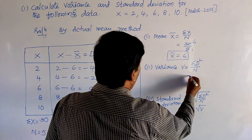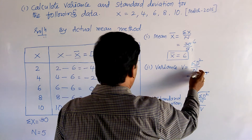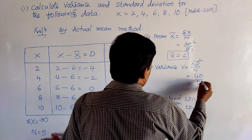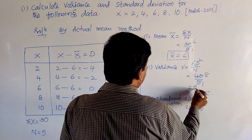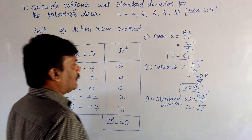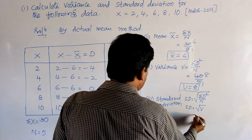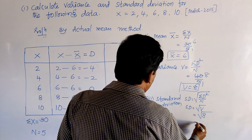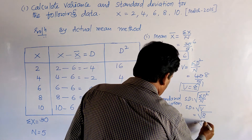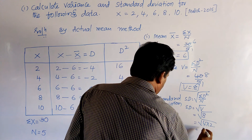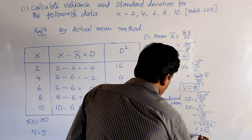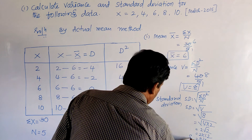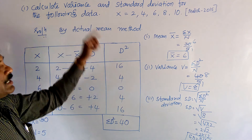Now we calculate variance: V = σd² / n = 40 / 5 = 8. So variance equals 8. Now we calculate standard deviation — it is very easy. Standard deviation = √variance = √8 = √(4 × 2) = 2√2 = 2 × 1.414 ≈ 2.83. So that is the standard deviation of the given ungrouped data.